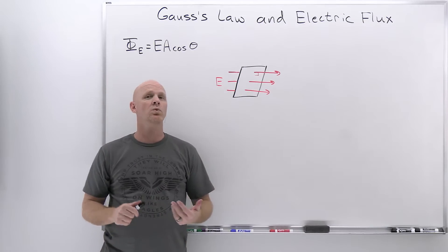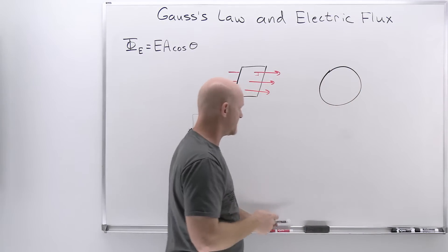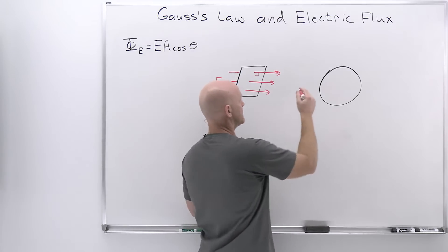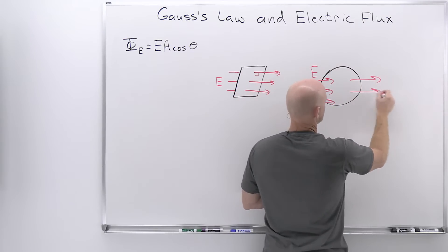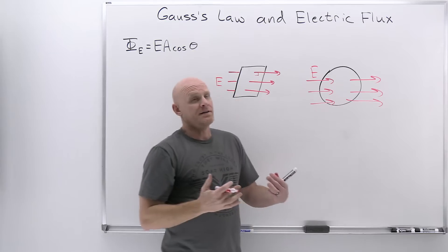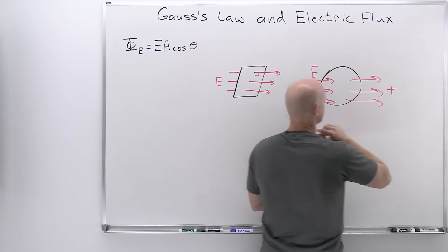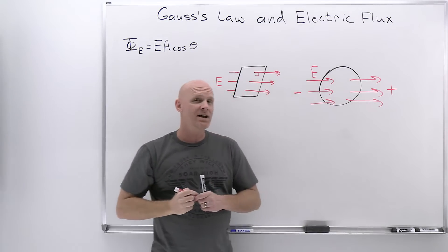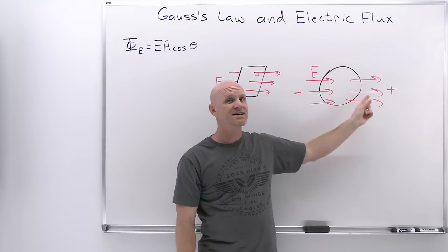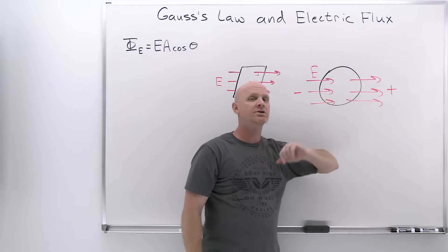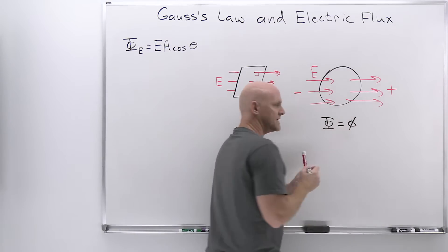In addition to a two-dimensional surface, we also want to consider a fully enclosed three-dimensional surface like a sphere. If this were in some external electric field, we'd have electric field lines entering the sphere but also exiting it. Electric field lines exiting the enclosed surface represent positive electric flux, and those entering represent negative electric flux. In the example shown, they perfectly match, so the net electric flux equals zero.